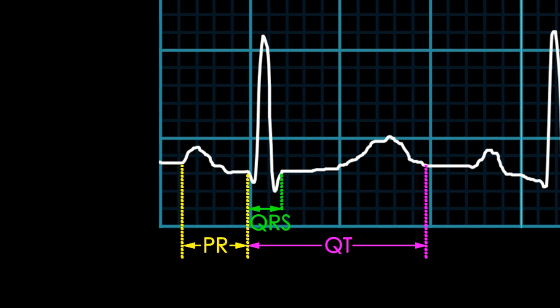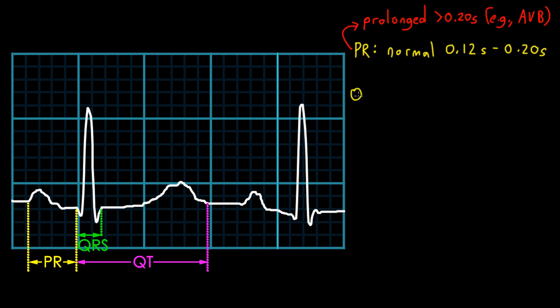The QRS duration represents the amount of time it takes for the ventricles to fully depolarize. It's measured from the start of the QRS complex to the end of the QRS complex. A normal QRS duration is typically less than 0.1 seconds or two and a half small boxes.